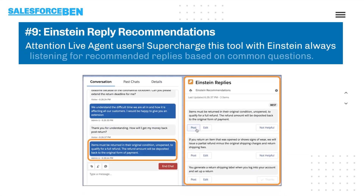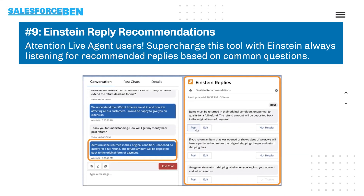Einstein continues to get smarter with every release, and now if you're using live chat you can get recommended replies based on previous interactions with customers.